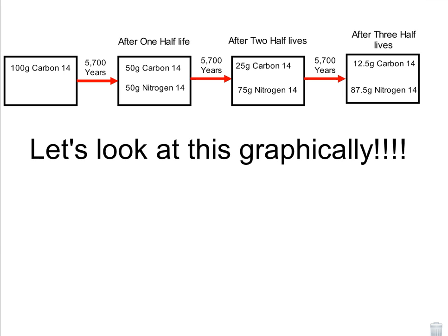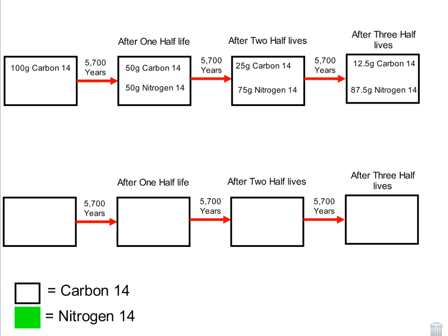So if we look at it from a graphical standpoint, our 100 grams would be an entire white box, and green would represent nitrogen-14, the white box representing carbon-14, which is the unstable atom. After one half-life, half of the carbon-14 would be converted into nitrogen-14, and the remaining half, after another half-life, half of that would be converted, and then the remaining half of that would be converted. So graphically you can see the change. You could do it in numbers, or you could do it graphically.